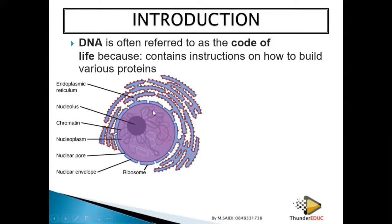Where is DNA found? DNA is found in the nucleus. If you remember from grade 10, we can see this in the structure of the nucleus. The DNA is part of what's called the chromatin network. When the chromatin network condenses, it forms what are called chromosomes.